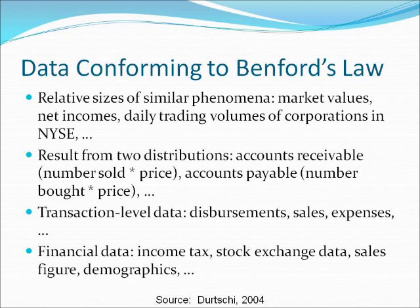If all the numbers in the list that confirmed Binford's law were multiplied by a non-zero constant, then the new list would also follow Binford's law. For example, accounts receivable is the number of items sold multiplied by the price per item, and accounts payable is the number of items bought multiplied by the price per item. Binford's law also can apply to transaction level data such as disbursements, sales, and expenses, because the larger the number of transactions or items in the data set, the more accurate the analysis.